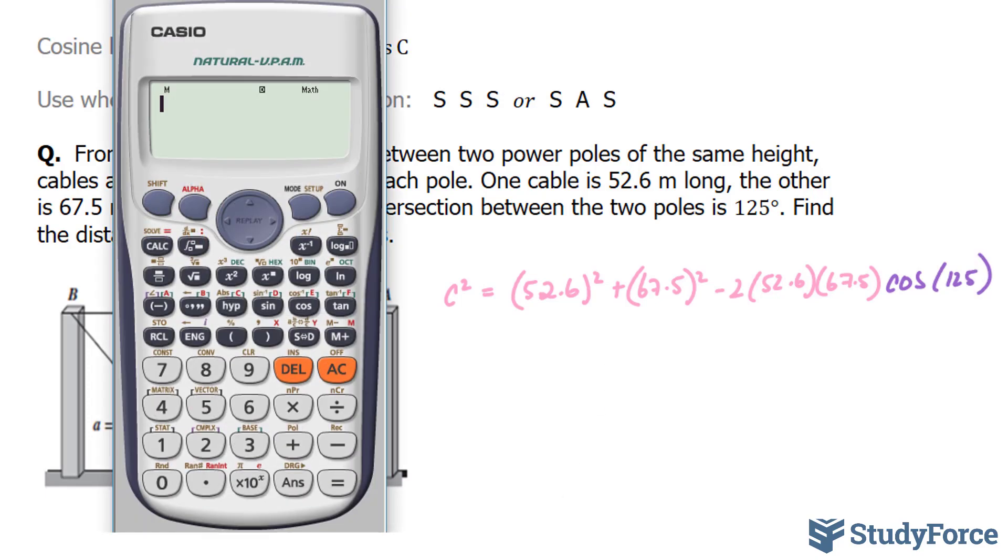Using our calculator, I'll do this all in one step. Maybe you can try the same thing. So 52.6 squared plus 67.5 squared. These two so far. Minus 2 times 52.6 times 67.5 times cosine 125. Make sure your calculator is in degrees. If it's in radians, you're going to get the wrong answer.